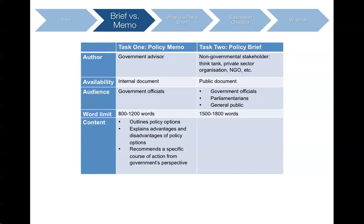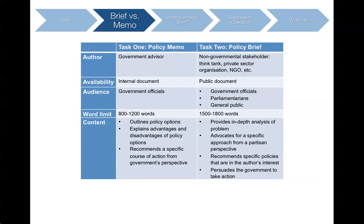Now let's look at the content. Because the Task 1 policy memo was written from a government advisor's perspective, you had to play an advisory role, outlining the advantages and disadvantages of several policy options before recommending a course of action. But now that you're writing from a non-governmental stakeholder's perspective for Task 2, the content will be a bit different. You have to analyze the problem, making it sound really urgent so that people will pay attention. Lobby, advocate, and push for a particular course of action that would be in your organization's interest. Recommend your policies, and convince your readers that your approach will have a positive outcome, improve the current situation, and benefit many different parties besides yourself.